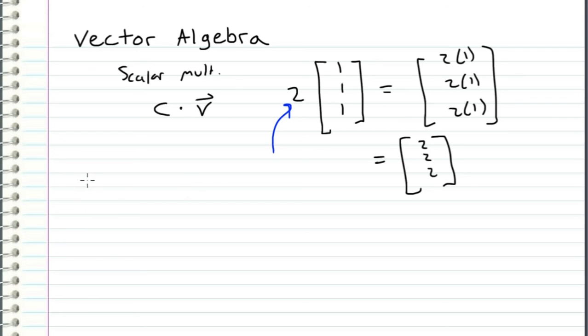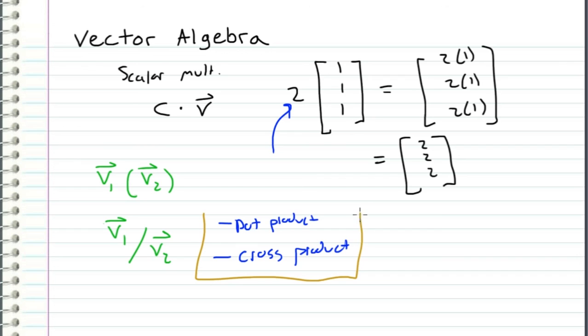And as far as multiplication and division with vectors go, we actually don't have any operations defined for multiplying vectors, and we also don't have any operations defined for dividing vectors. Instead, we have other operations like dot product and cross product. But these operations do not have the same physical meaning that conventional multiplication and division have with numbers. So we will come back to these concepts in later videos.